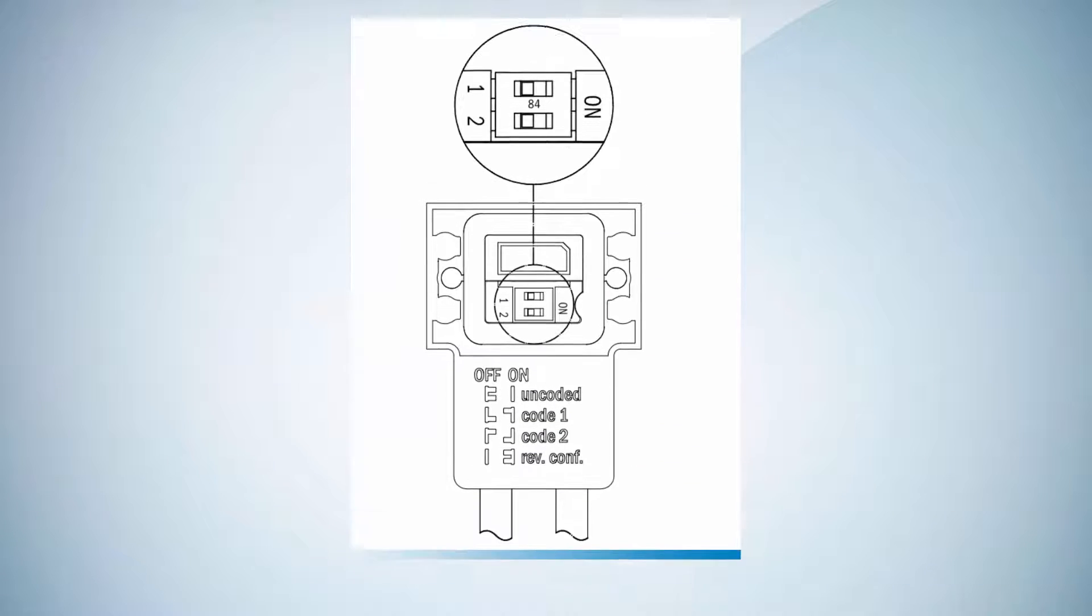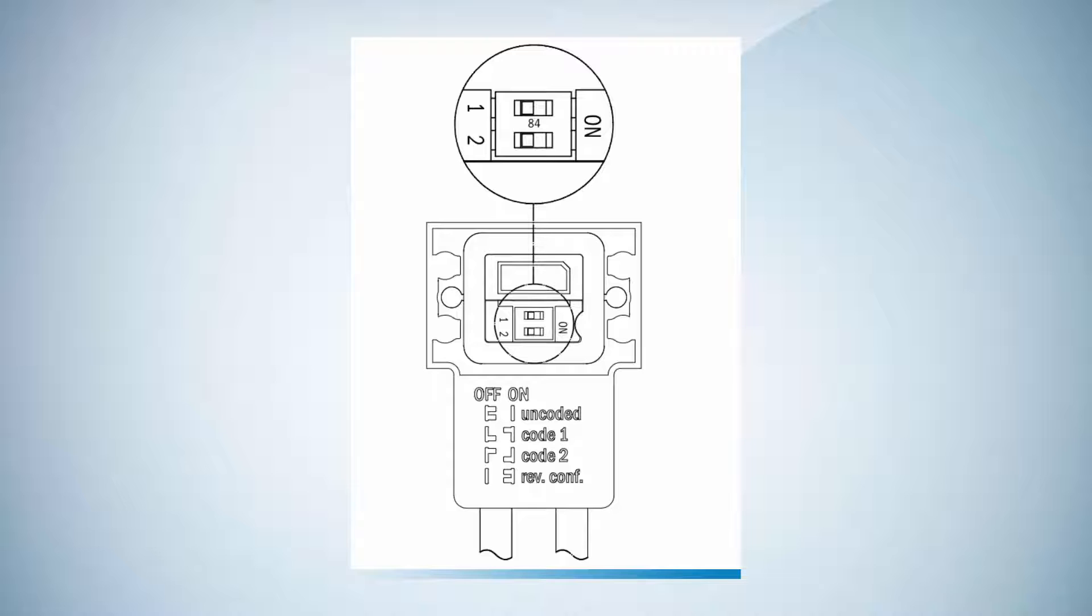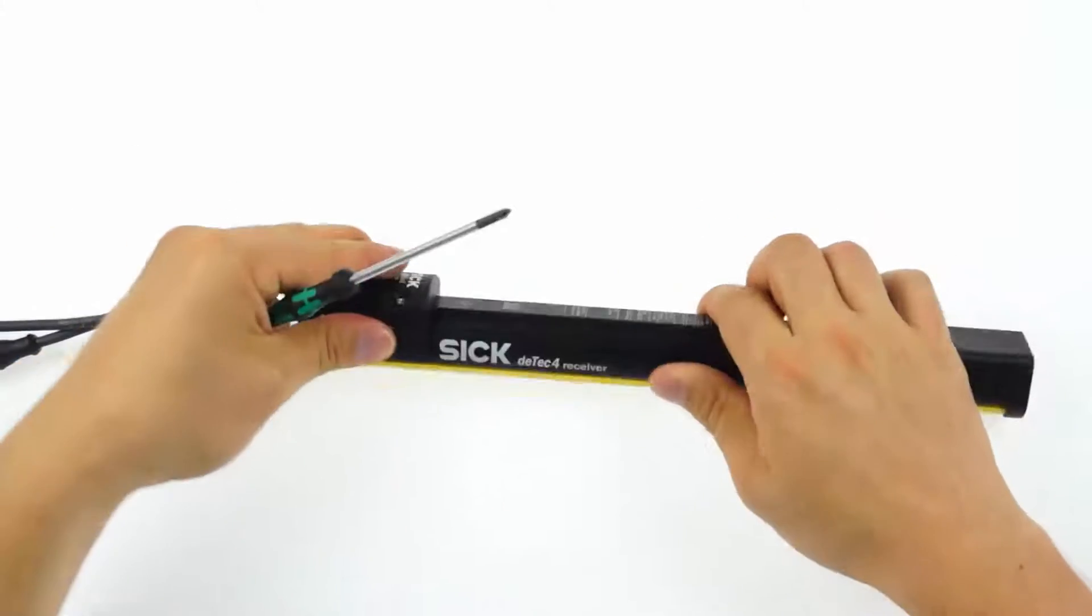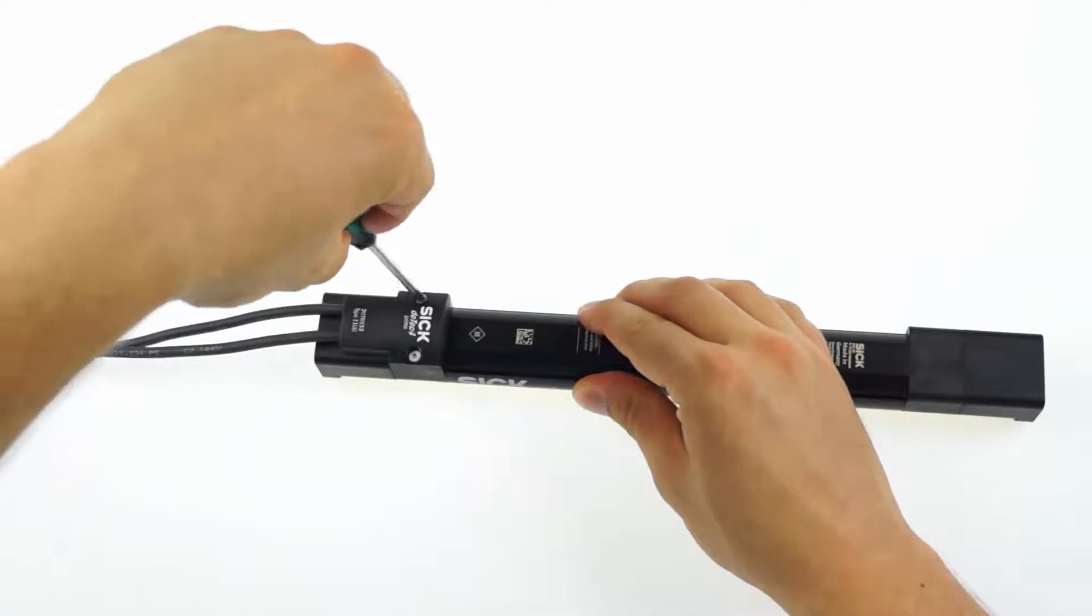The new DTEK 4 Prime incorporates a beam coding function to prevent the devices from being influenced by a second system. To configure beam coding, disconnect the device from the power supply.